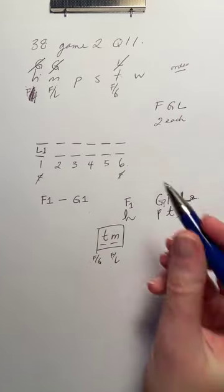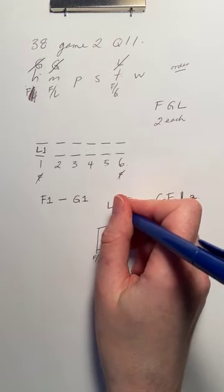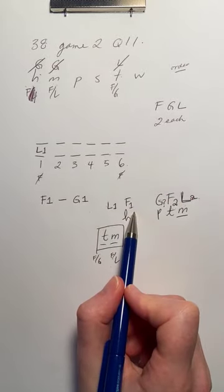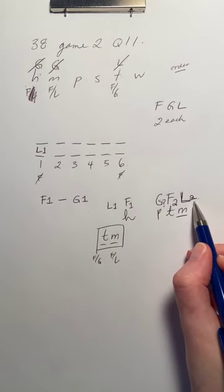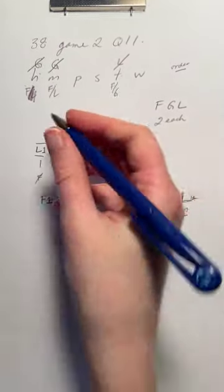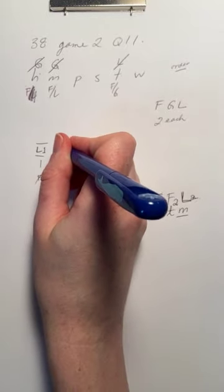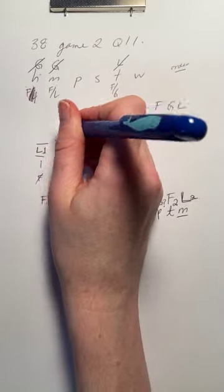So, we're going to have L1 somewhere before this one, well, actually, immediately before this one, right? Because L2 is over here. So, we're going to have L1, F1, F1 is harvesting.